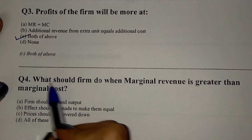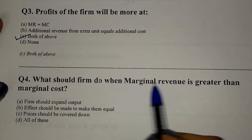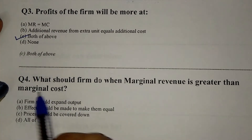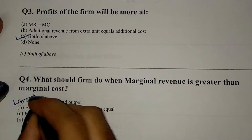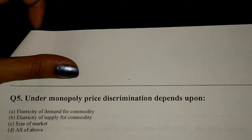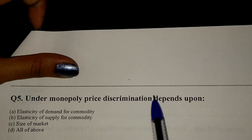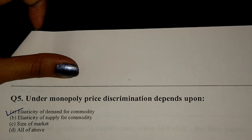What should a firm do when marginal revenue is greater than marginal cost? Option A: the firm should expand output. Under monopoly, price discrimination depends upon elasticity of demand for the commodity — option A.